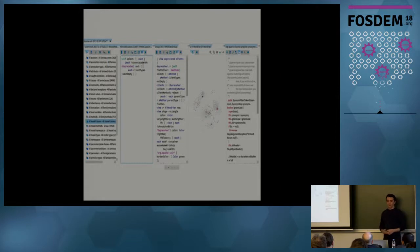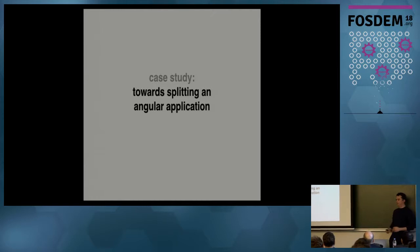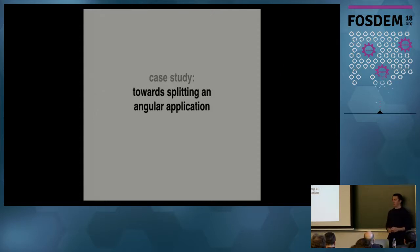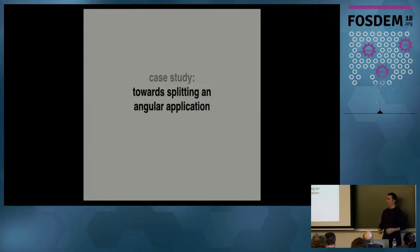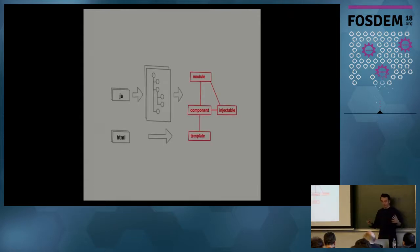Now let's move to a second use case. The previous one was a Java example. This one is actually from a real client we had to work with to help them with their Angular application. Their problem was that they had a big Angular 1 application — around 300,000 lines of Angular 1, quite a big monster. They were trying to decouple it from a big monolith into a few components so they could develop those independently, because everything was connected with everything.